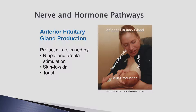Prolactin is released simultaneously with oxytocin from the anterior pituitary gland. This hormone causes the alveolar cells to produce breast milk, referred to as the milk-making hormone. Infants suckling at the breast more than 8 times in 24 hours prevent prolactin levels from dropping too low. Prolactin, unlike oxytocin, is only released by the stimulation of touch to the nipple and areolar complex containing the nerve endings, whereas oxytocin can also be stimulated by sight, smell, and sounds.